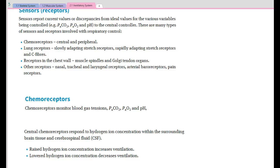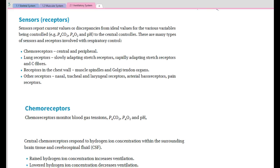This is just very quickly looking at the different sensors. Chemoreceptors, so we're looking at the oxygen and carbon dioxide. Lung receptors that we'll look at in a minute. Receptors on the chest wall. And we don't need to worry about the other receptors.